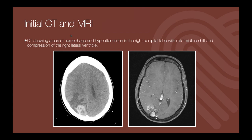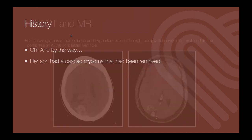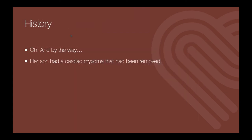On CT and MRI, there's an area of hemorrhage in the right occipital lobe with surrounding hypoattenuation, and an enhancing nodular mass corresponding to that area on contrast-enhanced MRI. By the way, the patient also had a history of a cardiac myxoma that had been removed in the past.